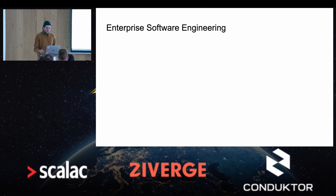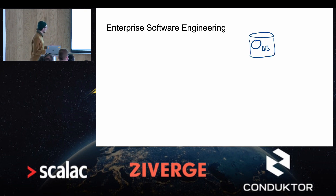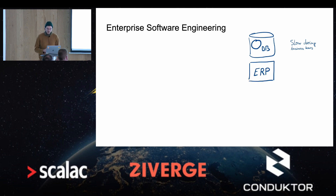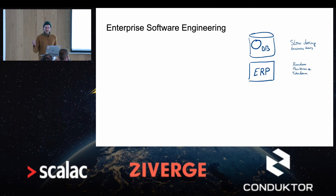A little landscape of enterprise software engineering — at least as I have experienced it — is that you have somewhere a database, there's a nominous O for Oracle in there. It's a big monolithic thing. You have to use it because that's where data is. However, maybe it's a bit slow during business hours. If you run a huge query, sometimes you just have to be patient. You may have an ERP. It's great. It has everything you need to know about your customers, except that the ERP team sometimes says, hey, let's have a random maintenance during the day, and there goes your service.